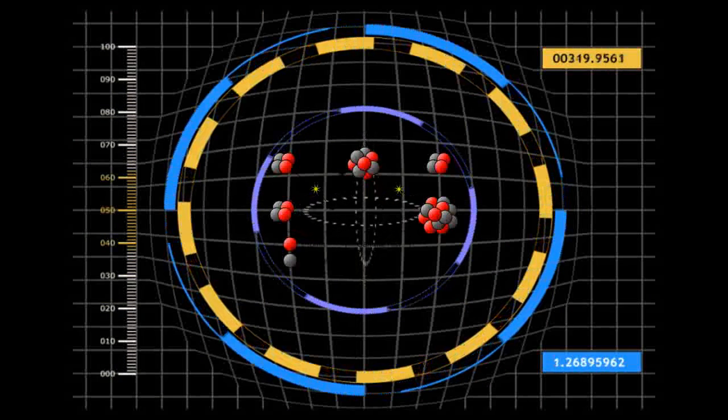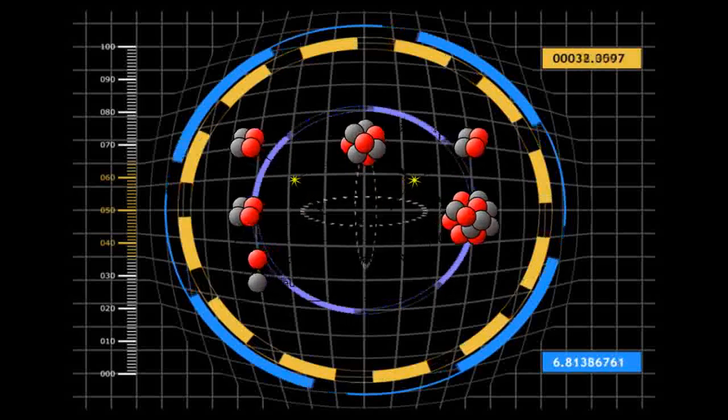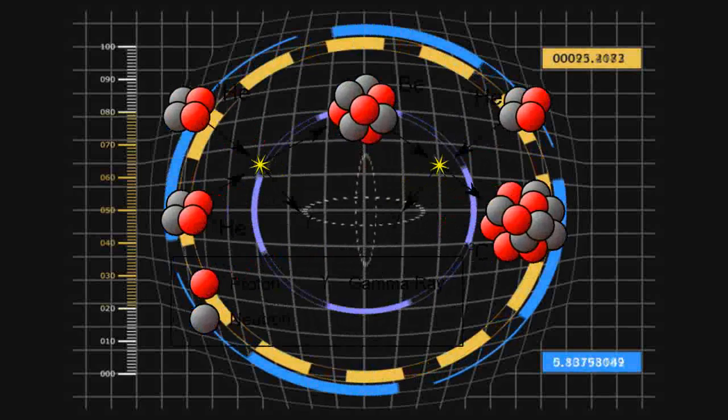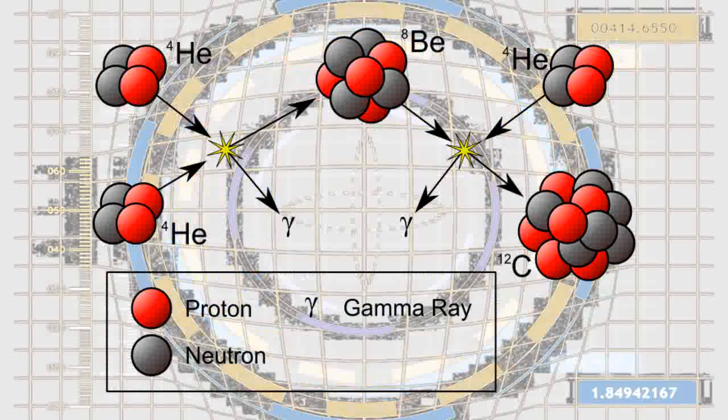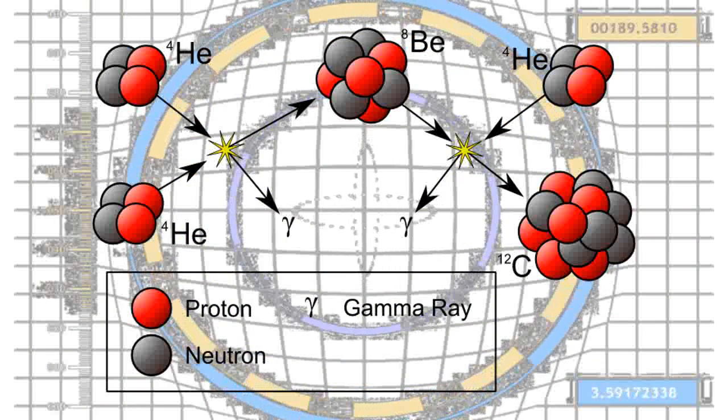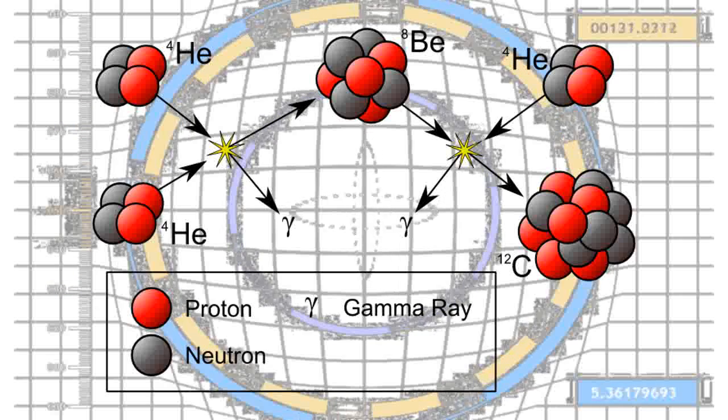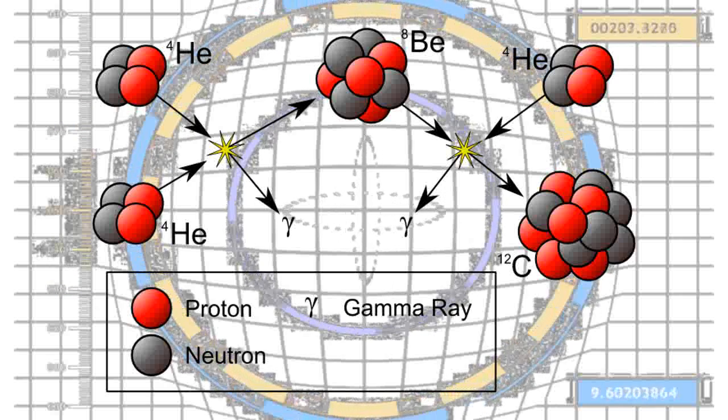While trying to work out the way stars manufacture chemical elements, Hoyle observed that one particular nuclear reaction, the triple alpha process, which generates carbon, would require the carbon nucleus to have a very specific energy for it to work.